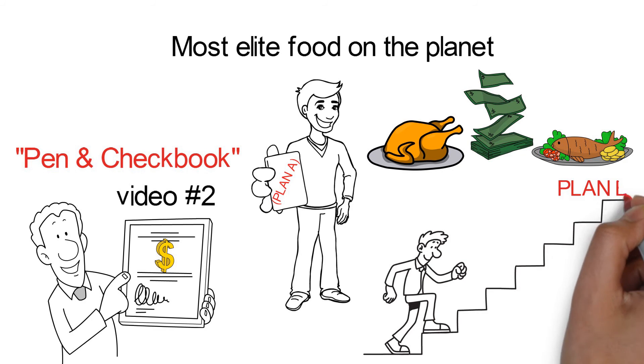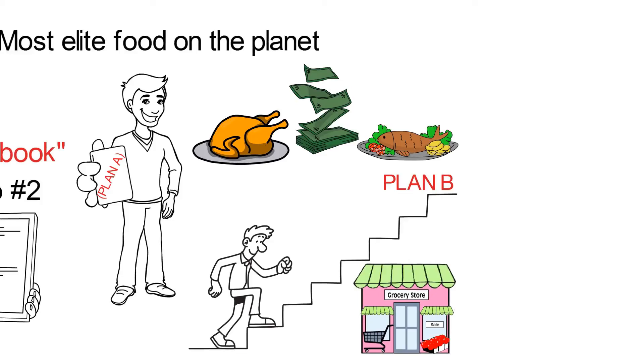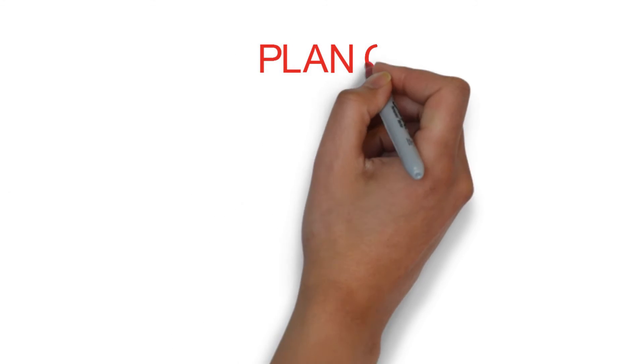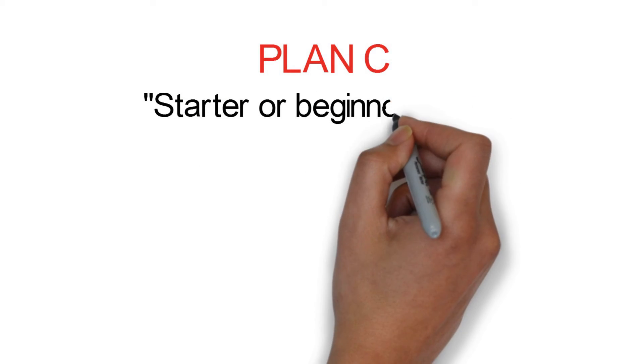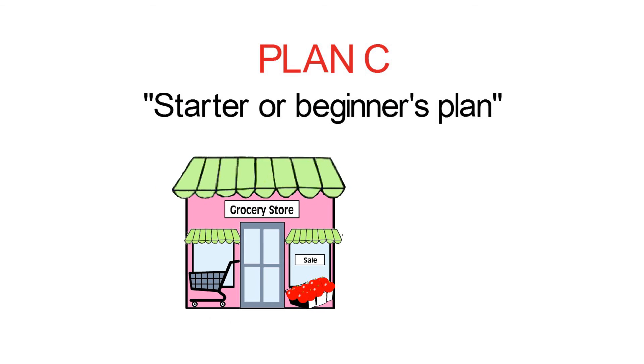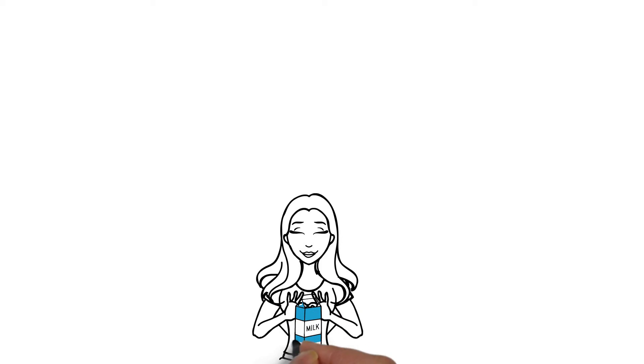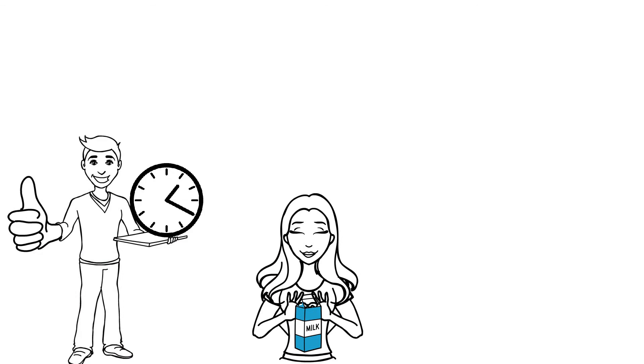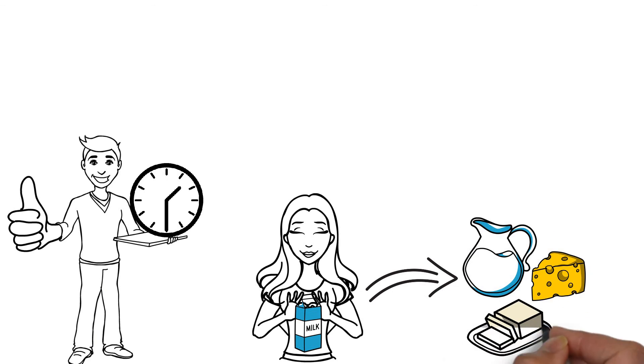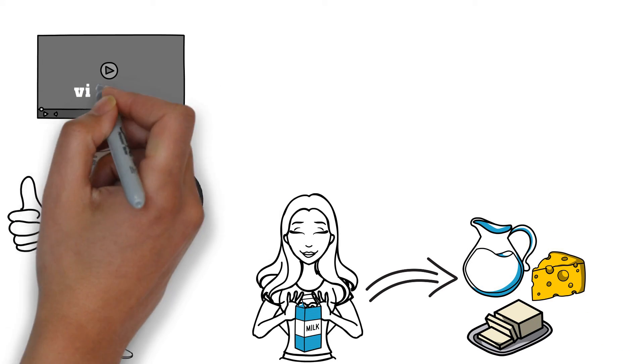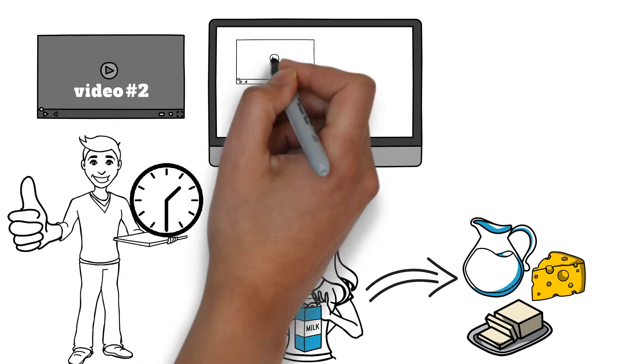Which is simply changing grocery stores. Plan C is your basic starter or beginner's plan, and you don't change stores and you don't spend any more money than you do now. You become a basic label reader. My explanation to you will take less than one minute, and you change to a better quality dairy product. All you have to do is see video number two and watch some of the quick breakfast videos on this home page to know what I mean. Enjoy.